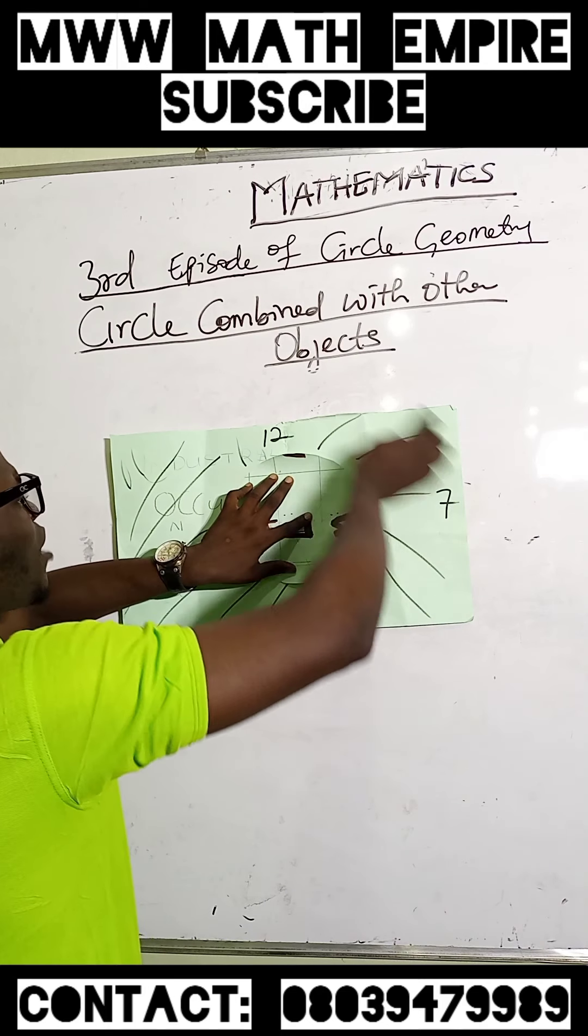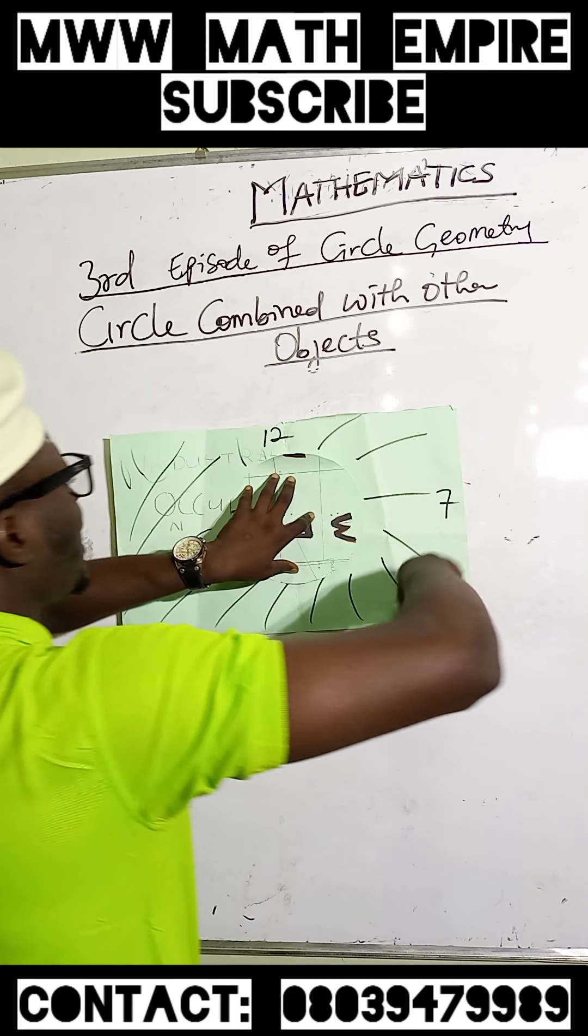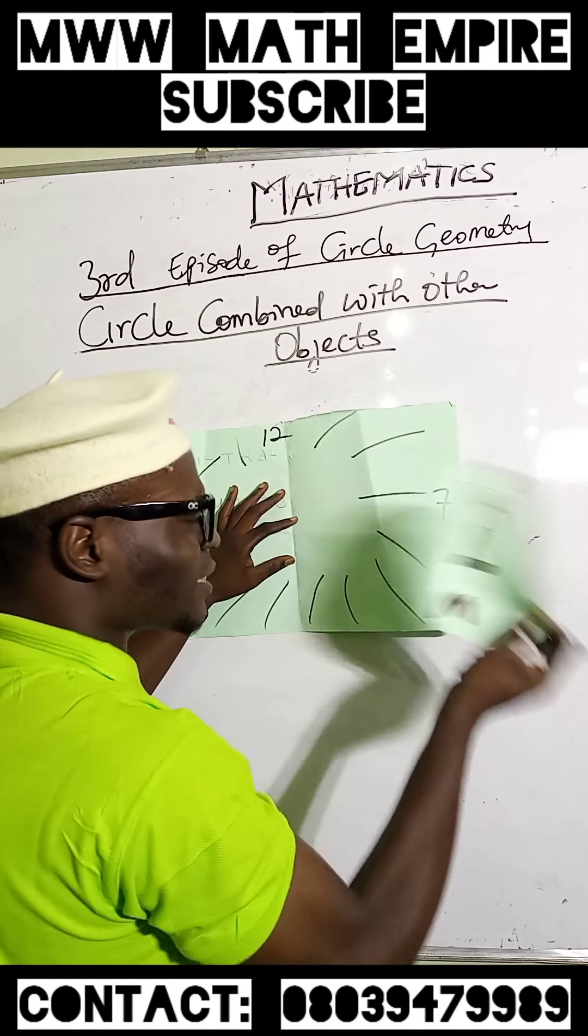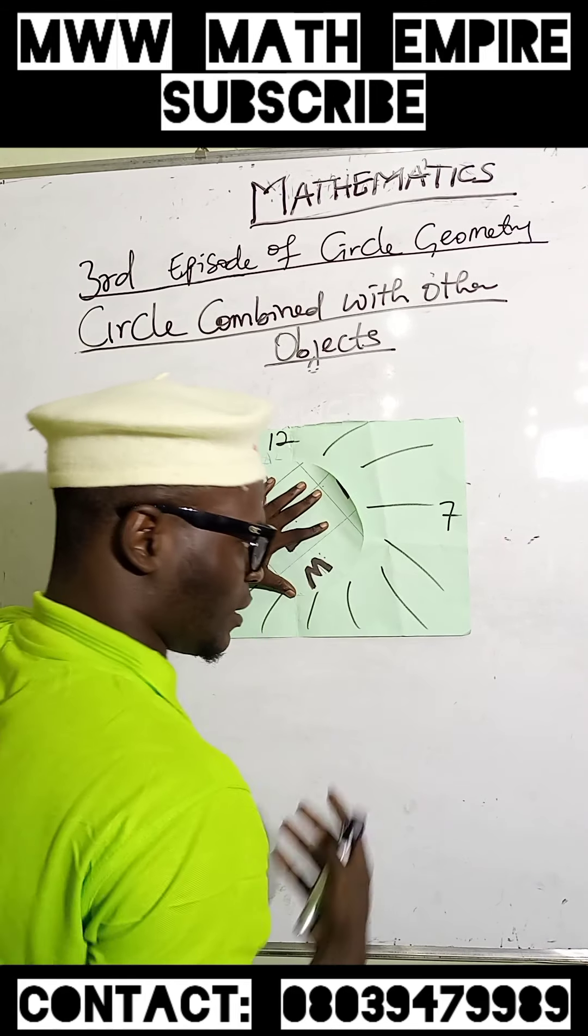To find the area of this shaded portion, we take the area of the rectangle and subtract the area of the circle from it.